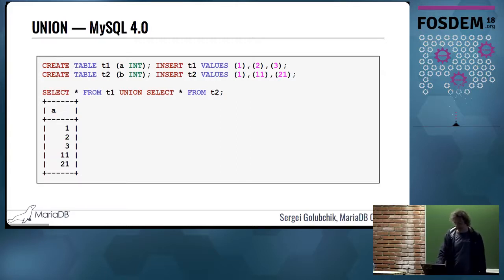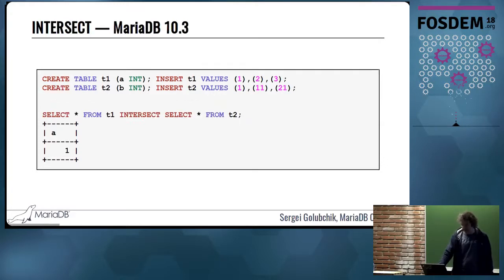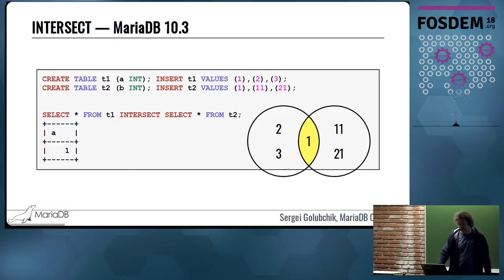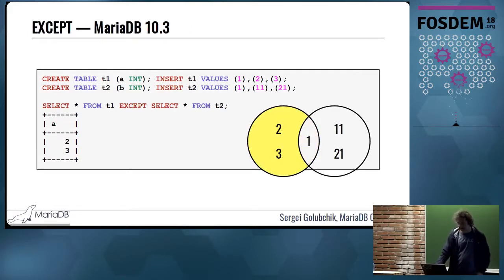Union, probably everybody knows that, was in SQL for many years. If you have two selects, then union will show rows that are present in at least one select. Two other set operations were introduced in SQL-92: intersect and except. Intersect will show only rows that are present in both selects, and if you draw circles like in kindergarten, which are called Venn diagrams, then you'll see that only the intersection of those two circles will be present in the final result set.